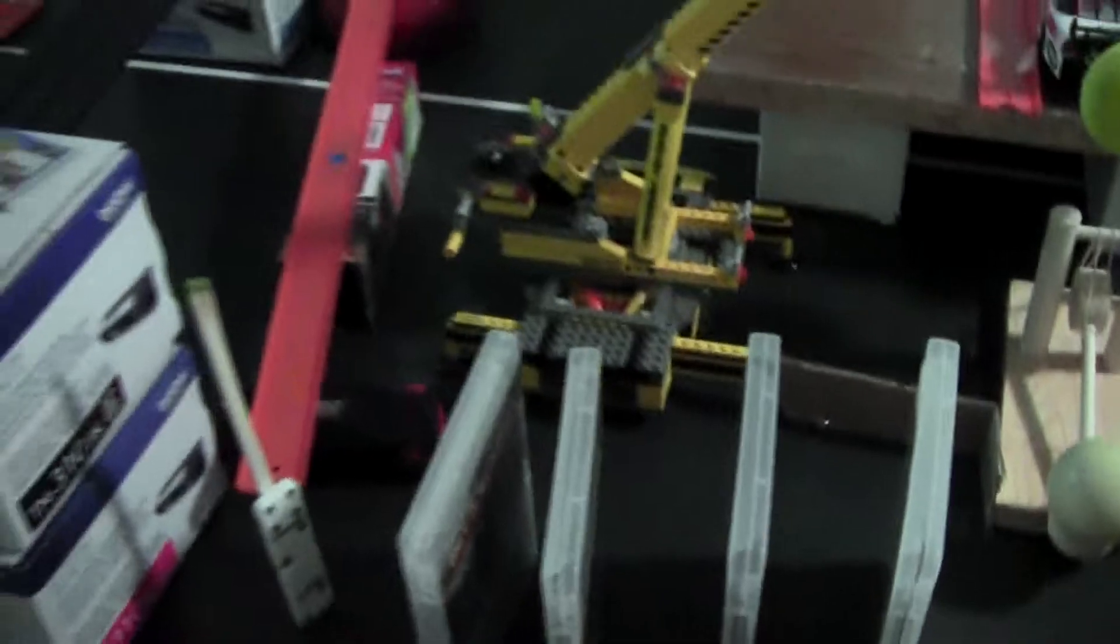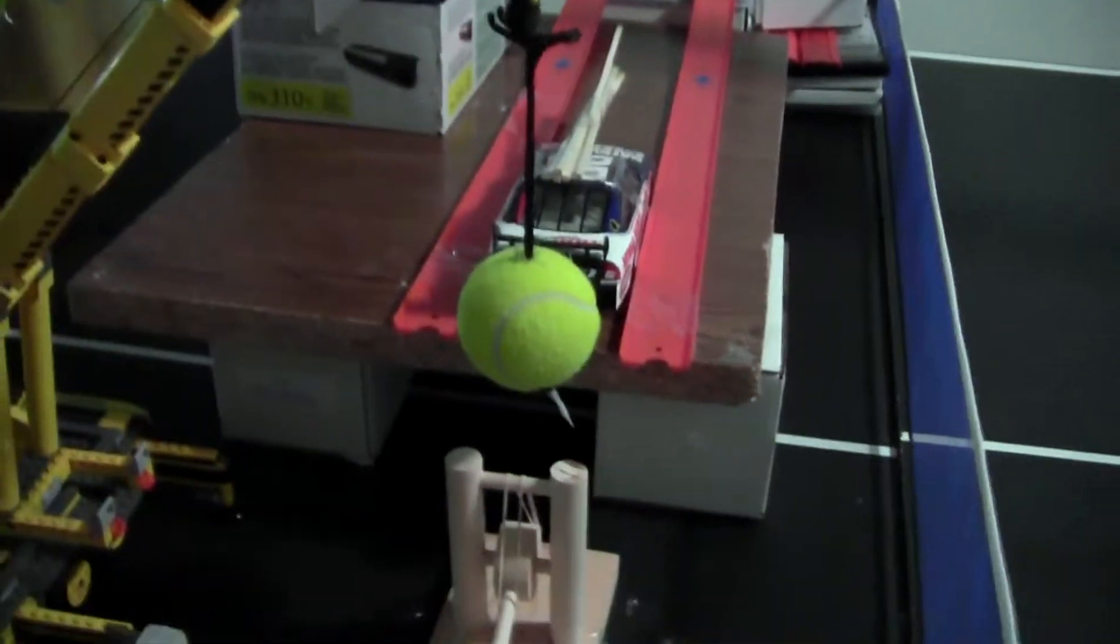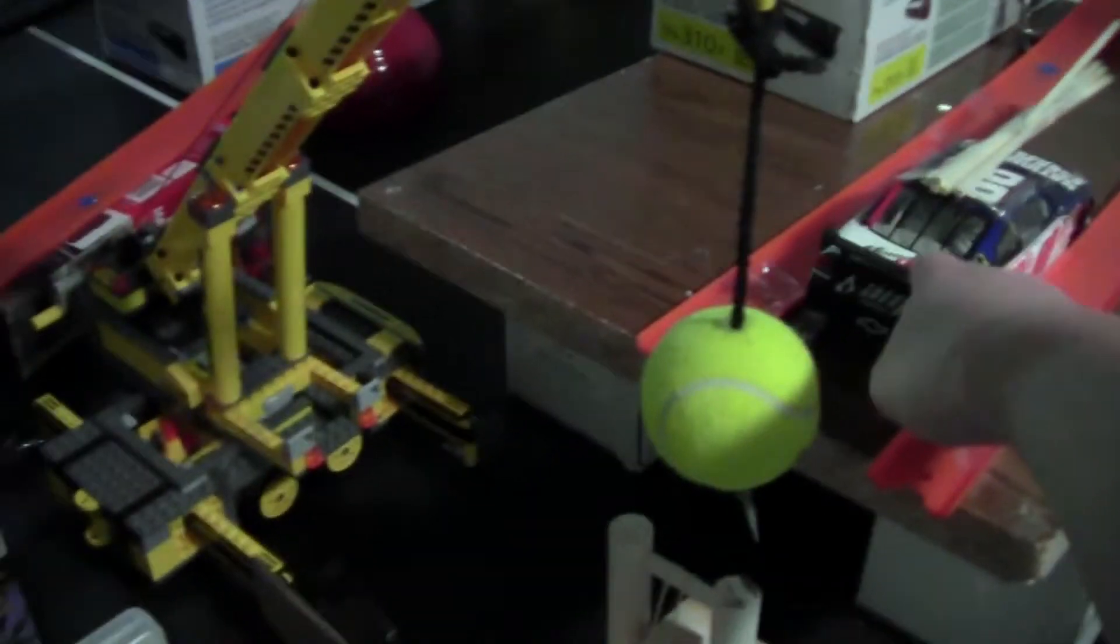Then the tennis ball will roll down the track and come and hit this domino which will hit down the video games and will knock the catapult free of the cue ball, and then it will hit the tennis ball which will make this car roll down there.